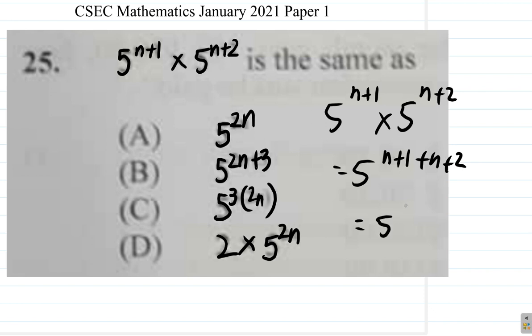5 to the power of, put like terms together, n plus n plus numbers now, 1 plus 2. This is the same as 5 to the, n plus n is what? It's 2n plus 2 and 1, 3.